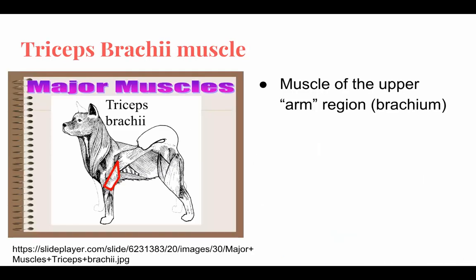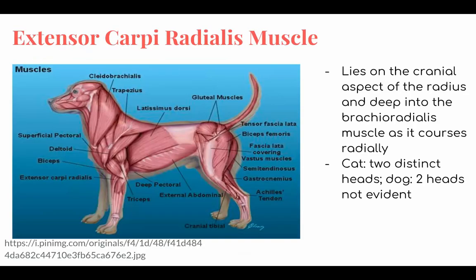Triceps brachii muscle. It is the muscle of the upper arm region, the brachium. It has three proximal head attachments. They extend from the distal scapula and proximal humerus down to the olecranon process of the ulna, the point of the elbow. The function is to extend the elbow joint.